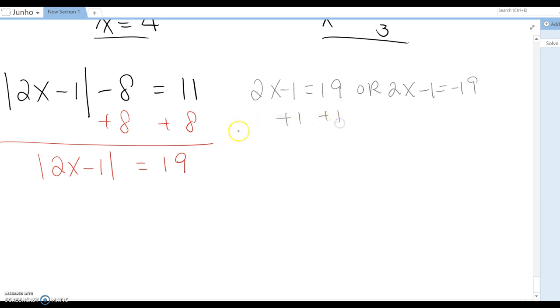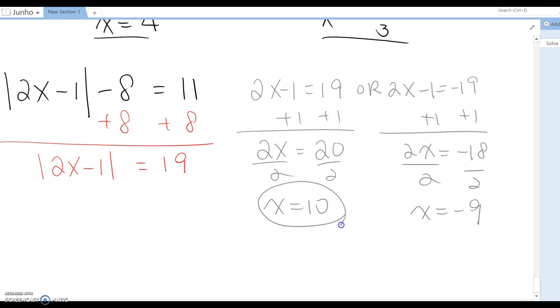Plus 1, then 2x equal to 20, divided by 2, so x equals 10. Or, combine 1, then 2x equal to negative 18, and divide by 2, then x equal to negative 9. Those two are answers for the question.